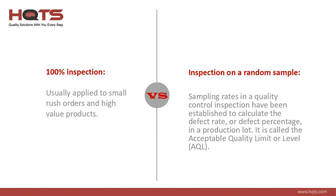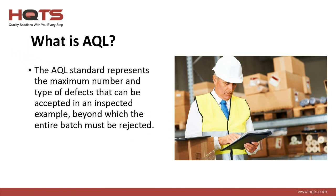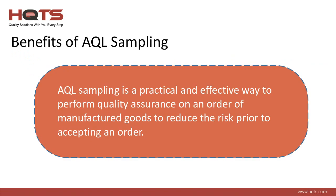The AQL has become the framework for determining the appropriate sampling size, number of items to be checked, and the ratios of defects found in the sample size. The AQL standard is defined in ISO 2859-1 as the quality level that is the worst tolerable percentage or ratio of defects that are still acceptable. In other words, it represents the maximum number and type of defects that can be accepted in the inspected sample. If there are more defects than the AQL allows, the entire batch is failed. AQL sampling is a practical and effective way to reliably measure the quality of an order of manufactured goods to reduce risk prior to accepting the order for shipment, allowing you to make an informed decision to accept or reject an order based on the inspection of a small sample of the overall order.